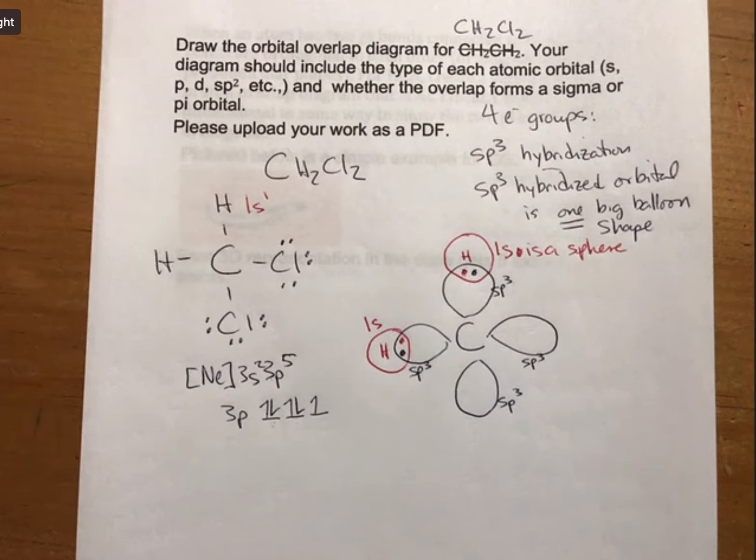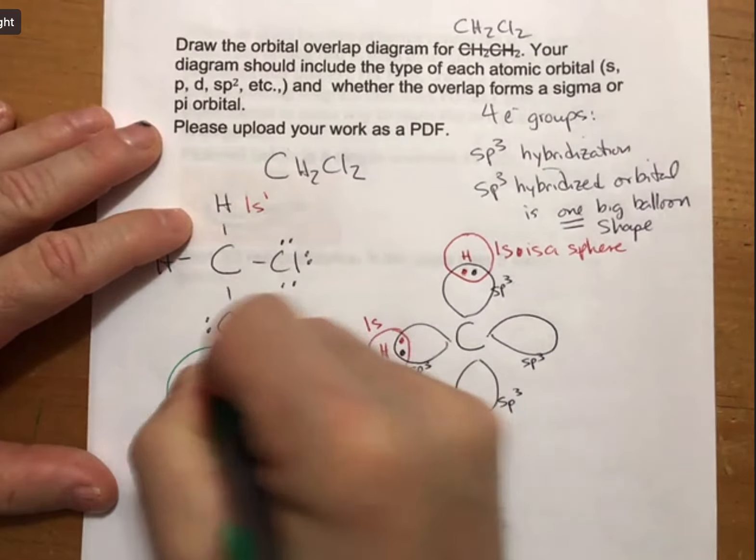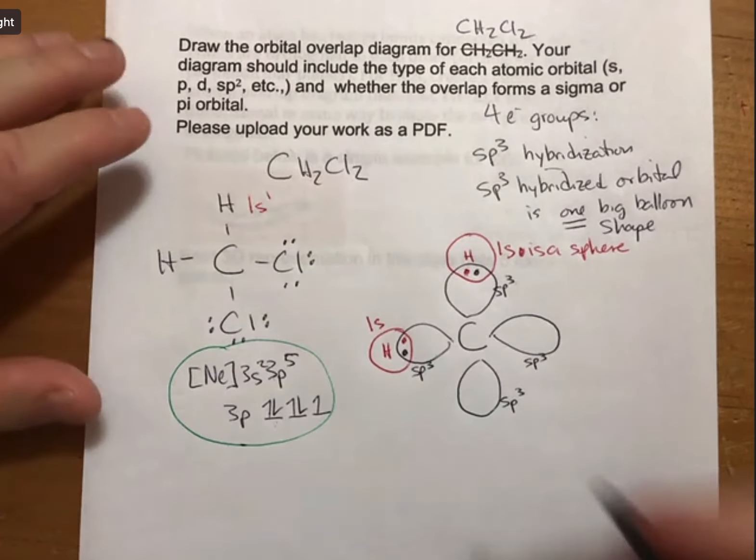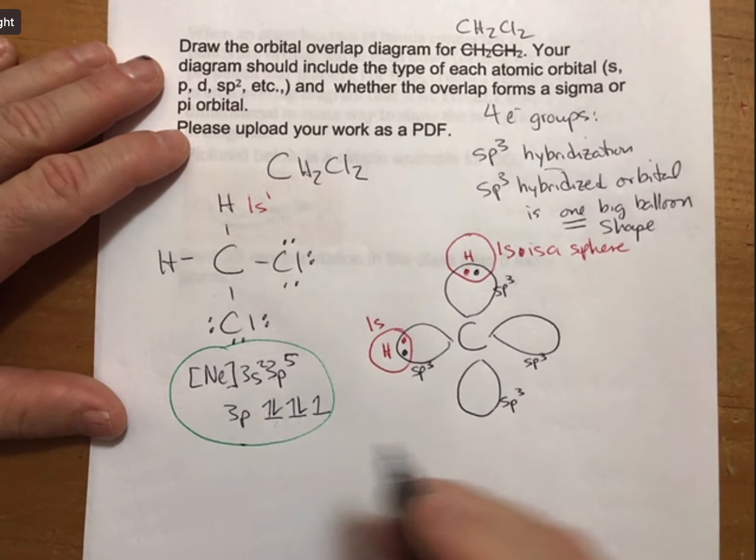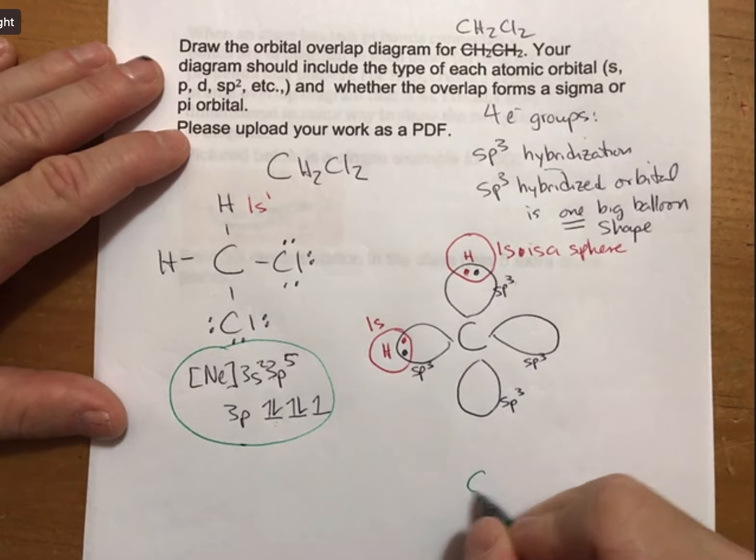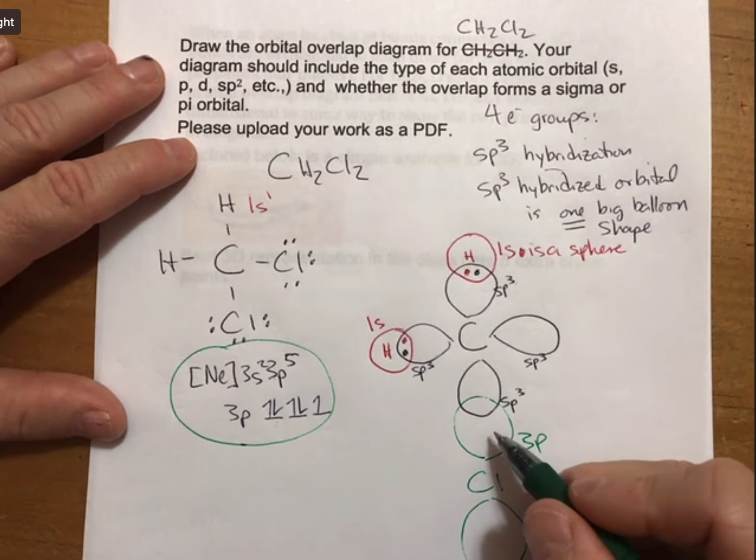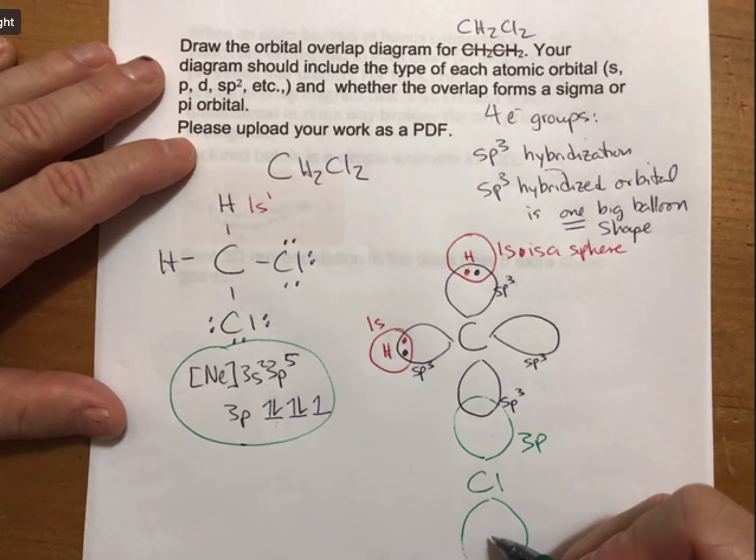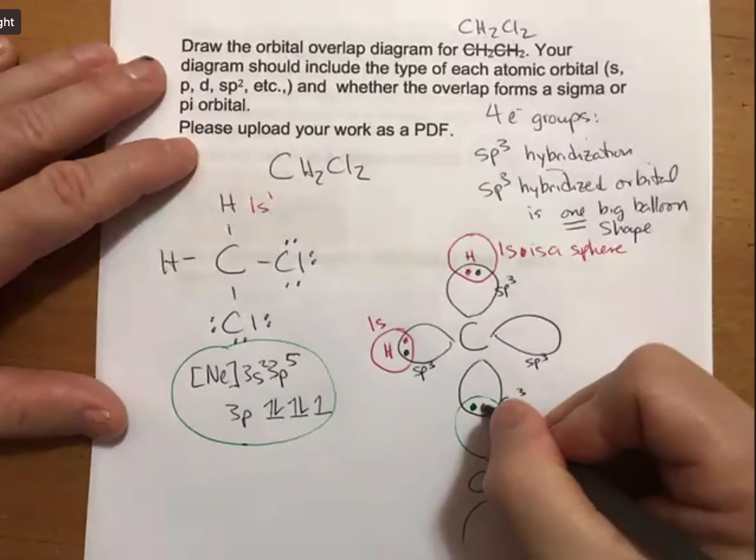I'm going to do this in green now. The 3p orbital is the one that's going to bond for chlorine. That's what a 3p orbital or any p orbital looks like. A p orbital has two parts to it and it has one electron for the chlorine and one electron for the carbon.